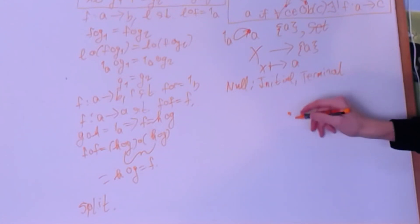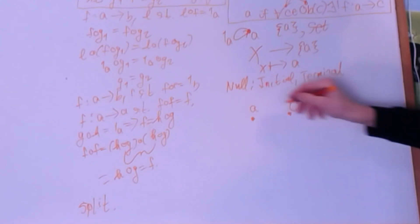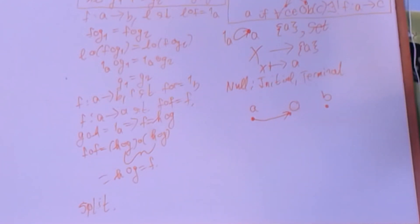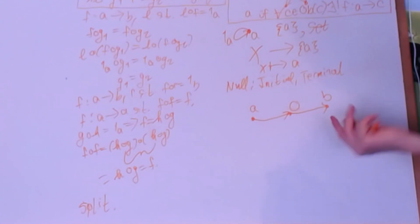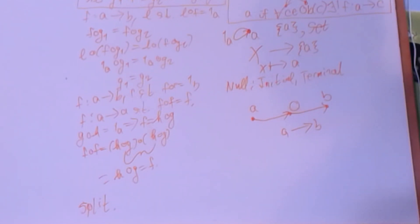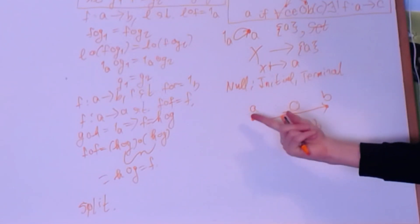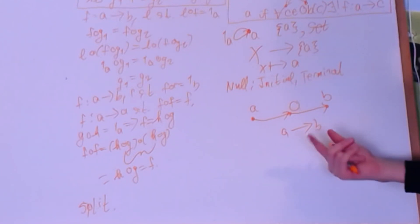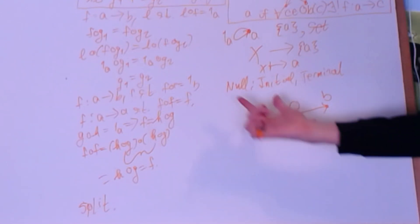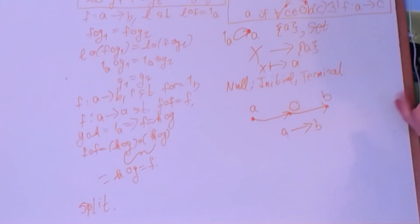A null object is one which is both initial and terminal. If we have a null element O and any two objects A and B, then we have a unique arrow from A to O by the fact that O is terminal, and a unique arrow from O to B by the fact that O is initial. Composing those two arrows gives a unique arrow from A to B — a morphism that skips over the null object. That is why it's called null: you can ignore it and preserve the same structure.